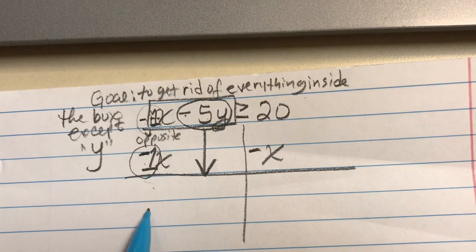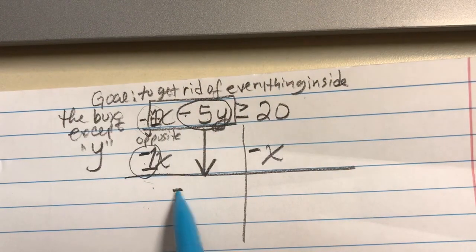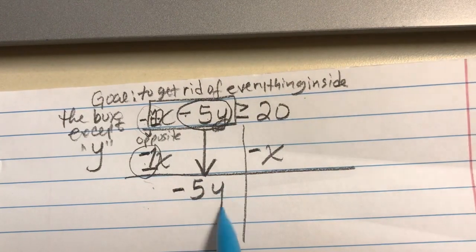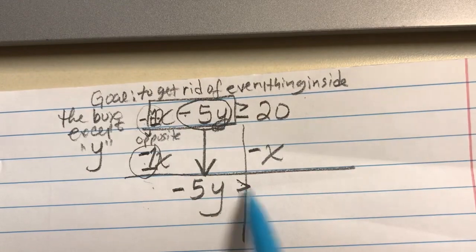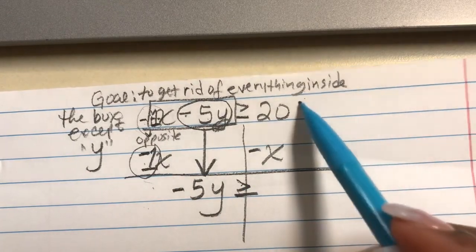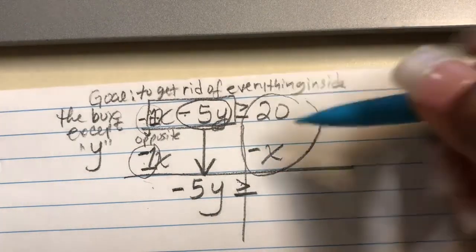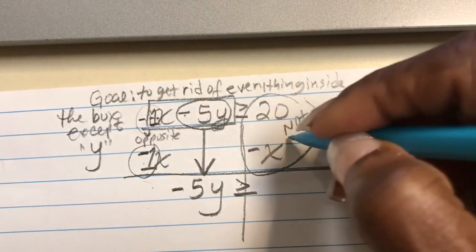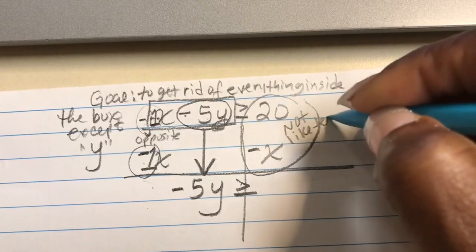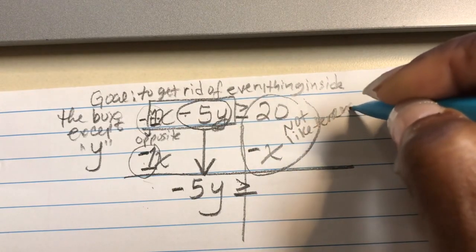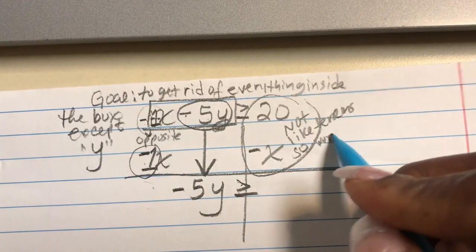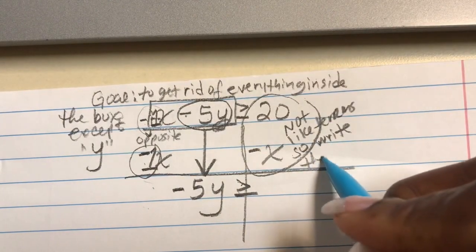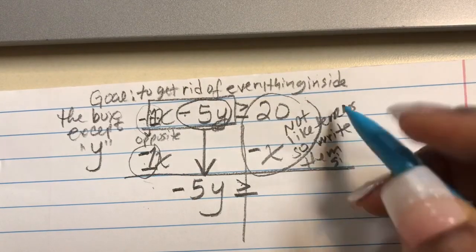The positive 1 and the negative 1 cancel each other out. I'm going to bring down everything I see inside the circle, the negative, the 5, and the y. My inequality symbol. And these two are not like terms. So all you do is write them side by side.